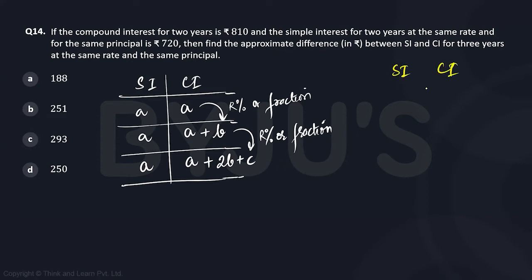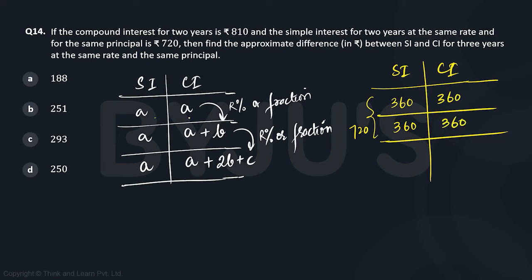As per the question, it is given that simple interest and compound interest for two years is 720 and 810. So this is going to be 720 when each of the values is 360, that means a is 360. We need to have 360 over here also because we do have a under CI as well. But how much shall we add so that it becomes 810? We need to add 90 here so that 360, 360, 90 matches with a, a, b and the sum is 810.